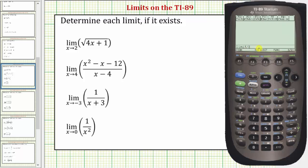And then we enter the function, comma, the variable, comma, the value we're approaching. So for this first limit, we'll enter the square root of the quantity four x plus one. So second, and then multiply brings up the square root. Then we have four x plus one, close parenthesis for the square root.